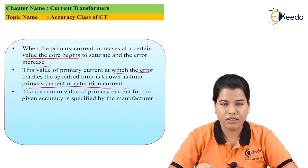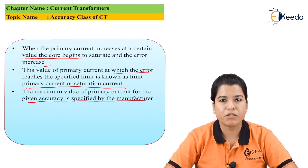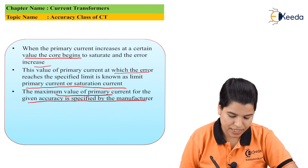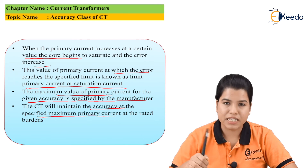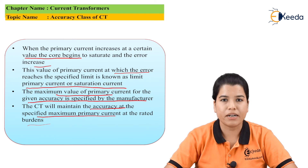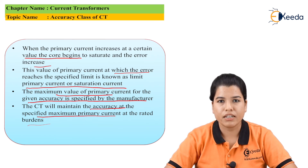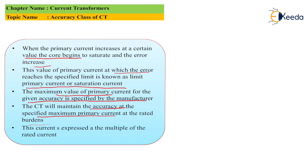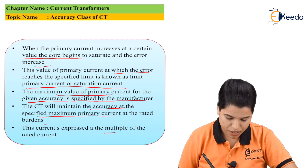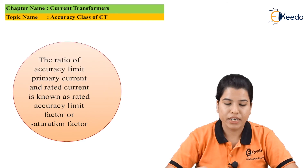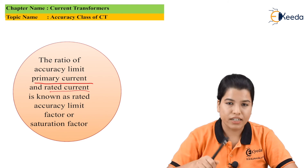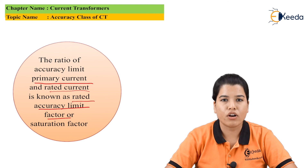The maximum value of primary current for the given accuracy class is always specified by the manufacturer. While designing the CT, the manufacturer will mention the value of maximum primary current. The CT will maintain accuracy at the specified maximum primary current at the rated burden. Whenever there is a load — that is burden — on the CT, the CT will try to maintain this rated primary current as specified by the manufacturer. This current is expressed in multiples of the rated current. The ratio of accuracy limit primary current to the rated current is known as the rated accuracy limit factor or the saturation factor.